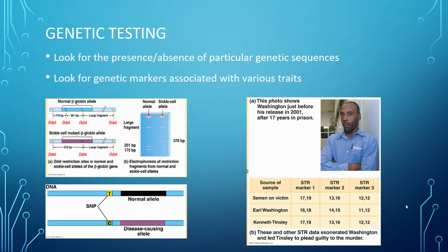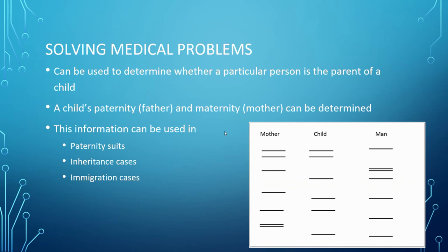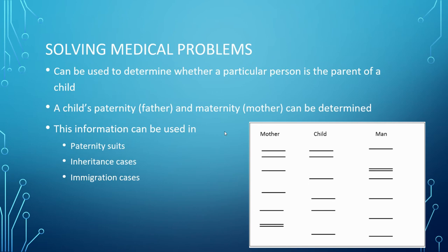With genetic testing, you can look for specific sequences using restriction enzymes to cut the DNA. You can look for various traits, and if you're missing a gene sequence, you'll obviously have shorter DNA and can see that. This helps solve medical problems. For a paternity test, you can determine if a man is the father. For a murder case, you have the suspect's DNA, DNA from the crime scene, and the victim's DNA — you can start to see if a person was there or committed the crime.